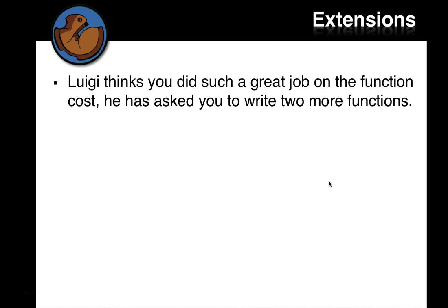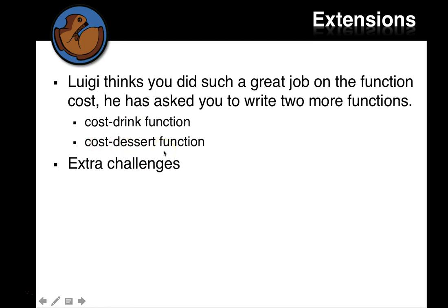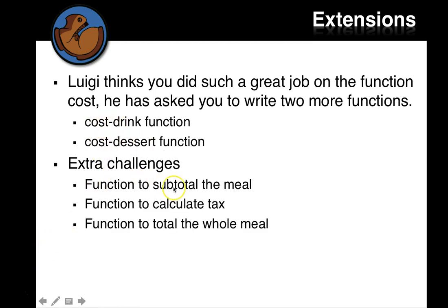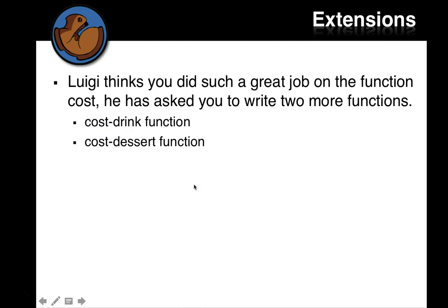Luigi thinks you did such a good job on the function cost. He wants you to write two more functions. Cost drink and cost dessert. So in the end of your book where you have, and we're not going to do these extra ones. We'll just do cost drink, cost dessert. So at the end of your workbook where you have extra lines for extra design recipes, do a design recipe for cost drink and a design recipe for cost dessert and make up your own domain for those with at least three examples. So you want at least three different drinks, three different desserts. You can make up the prices for those, but make your own version for cost drink and cost dessert. And go ahead and put those in the design recipe and also in your unit seven racket file and test them.